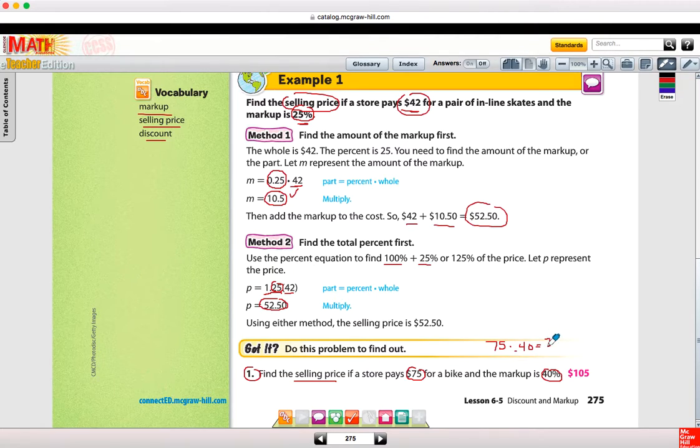The amount of the markup is $30, but $30 added on to the price the store pays gives me $105. The method two way of doing that is 75 times 1.40, and when you multiply that out, you get $105 in one step.